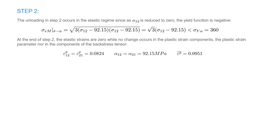In the second step, upon unloading, the von Mises stress evaluated at sigma₁₂ equals 0 and alpha₁₂ equals 92.15 is given by a value less than 360 MPa. Therefore, unloading occurs elastically. The values of the plastic strain components, the back stress, and the equivalent plastic strain do not change at all during this loading step.